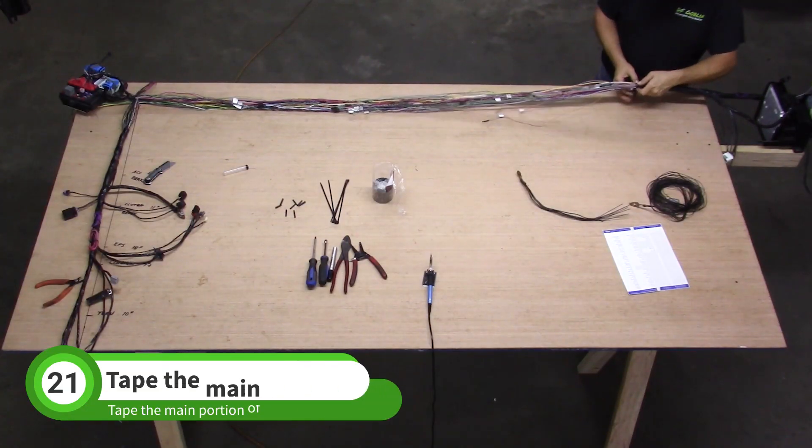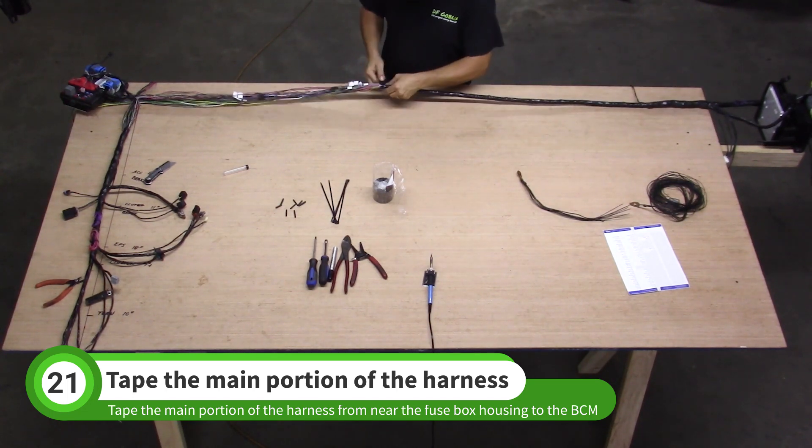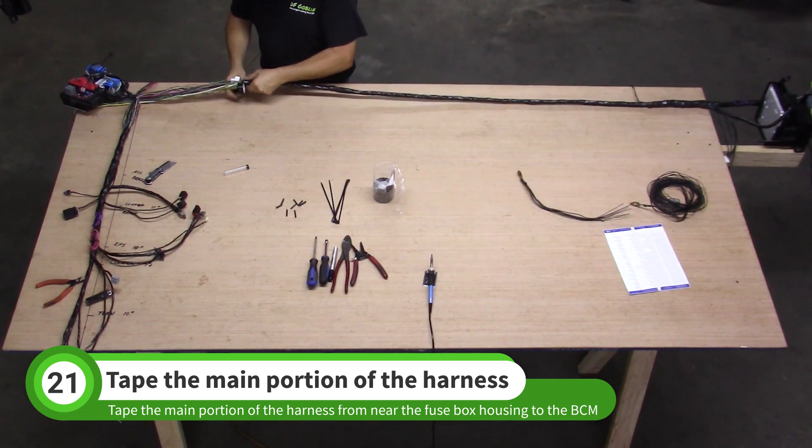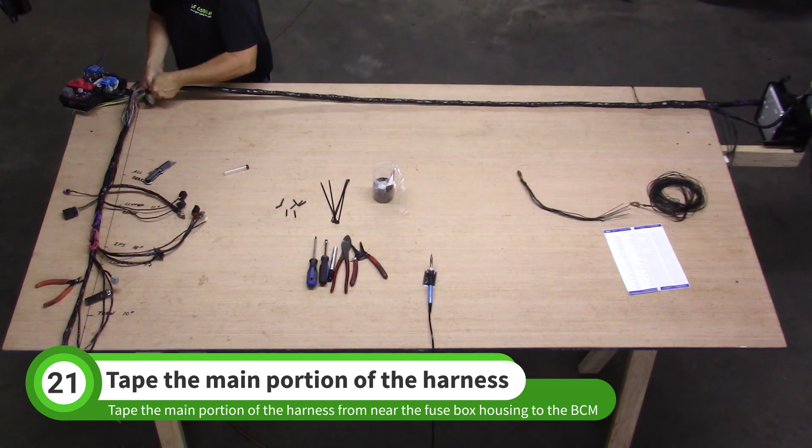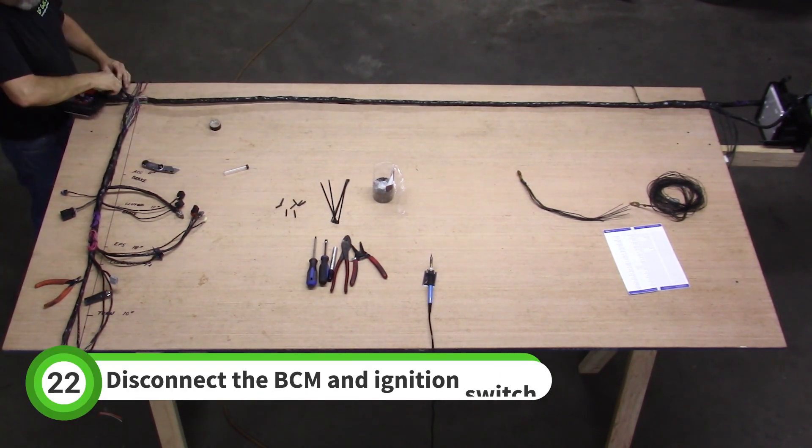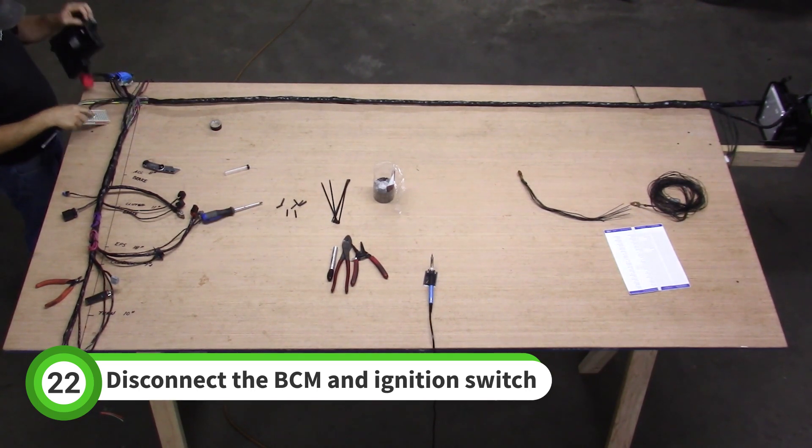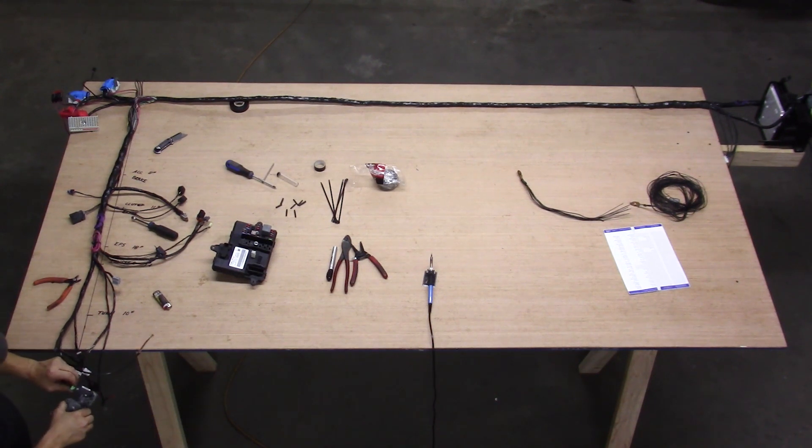Move to the main harness and tape it up moving toward the BCM. Stop where the main harness meets the dash. Disconnect the BCM and set it aside. Do the same for the ignition switch.